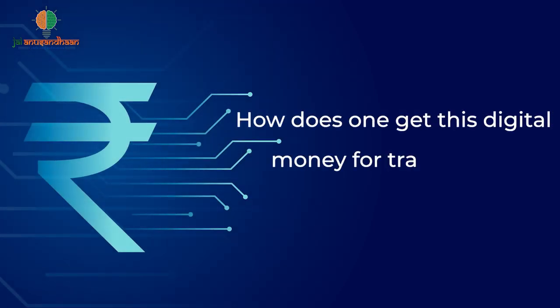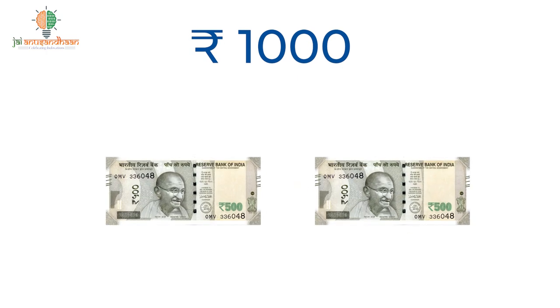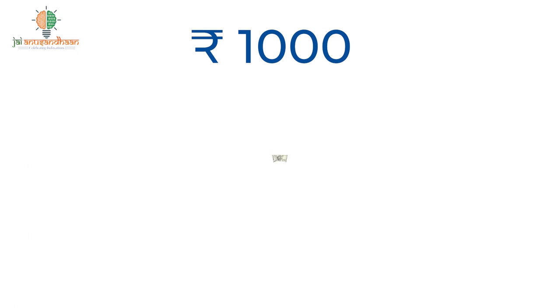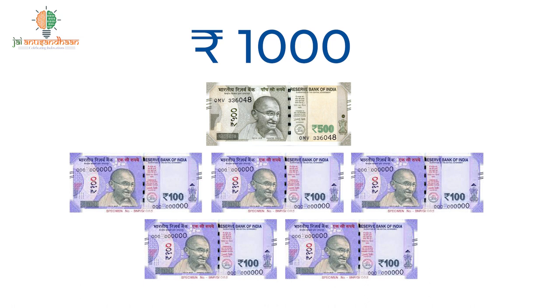How does one get this digital money for transaction? You need to install the CBDC app — the Central Bank Digital Currency app — and use a phone number linked to a bank account. Once you register successfully on the app, you will be assigned a digital wallet with a unique ID. You can then load your wallet by transferring money from your bank account. The app will let you pick currency in the denomination of your choice. For example, for loading 1,000 rupees, you can ask for two 500-rupee units, or ten 100-rupee units, or one 500-rupee unit and five 100-rupee units. Once you confirm, your digital wallet will be loaded with your choice of denominations.